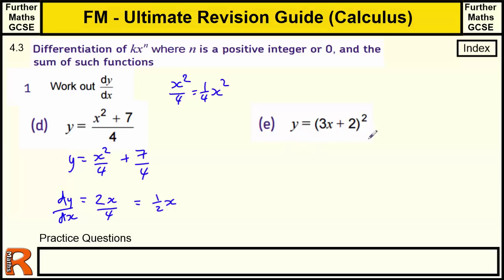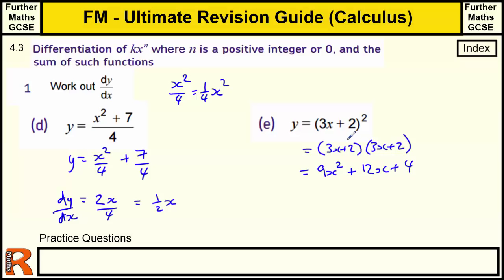E has double brackets: (3x + 2)(3x + 2). You square the front and back, and then the middle term is doubled. So that gives us 9x squared plus 12x plus 4. Differentiating: 2 times 9 is 18x, and 12. So fairly routine — with a bit of practice you should be able to do those no problem. It's a very important skill for the whole of calculus because we're going to use it all the time.